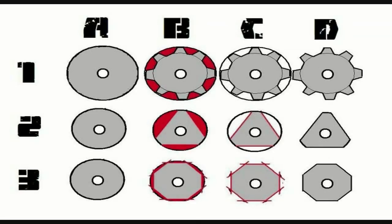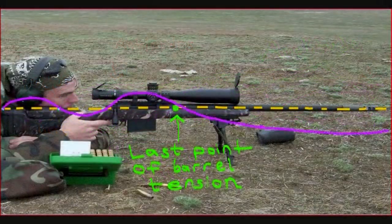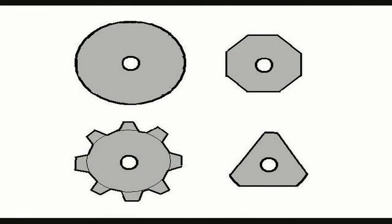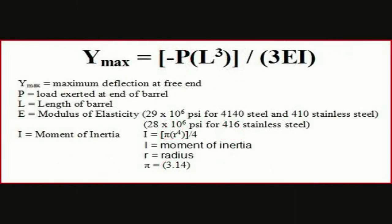Before we move on, we're going to go into some greater detail on some different barrel configurations and contours, and examine how these different profiles affect barrel rigidity. After posting the video on rifle vibrations and harmonics, I got some really good questions on how fluting and some of the triangular barrel designs affect rigidity. So this is definitely worth addressing — we're going to do another quick video and get some of the common misconceptions of fluting and other barrel profiles straightened out, and then we'll move on to the rest of our equipment selection.